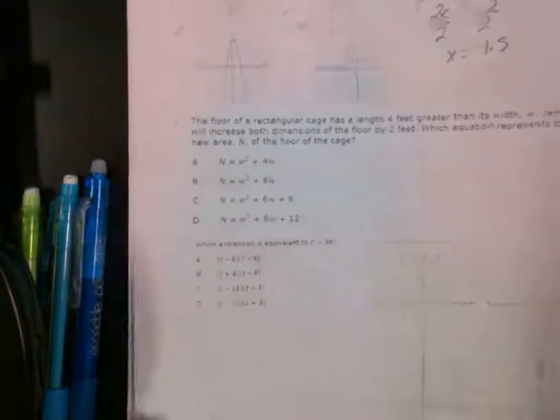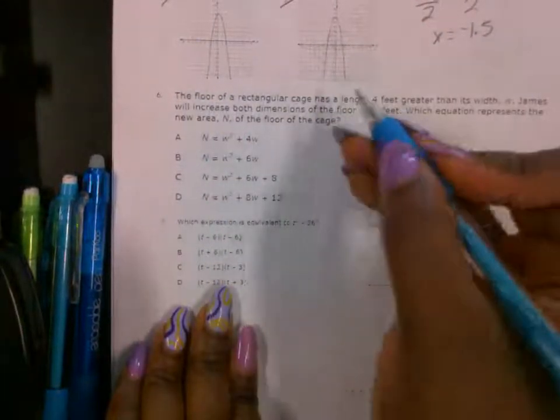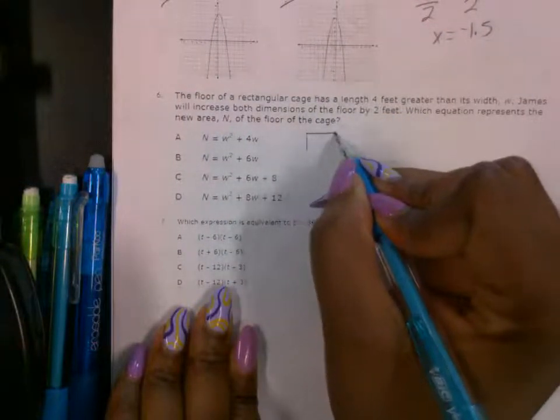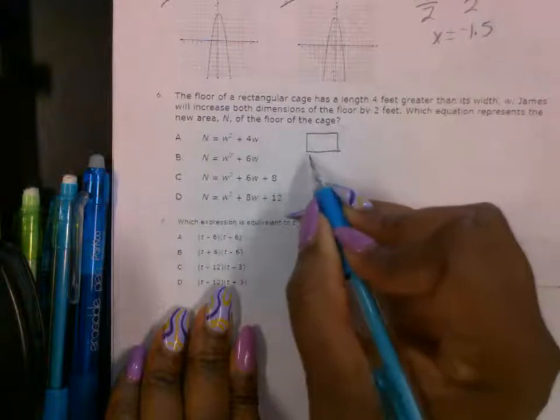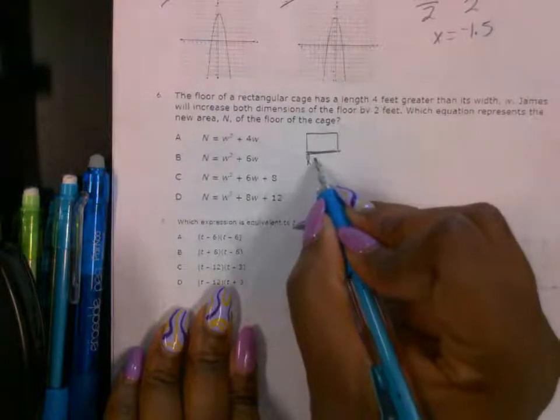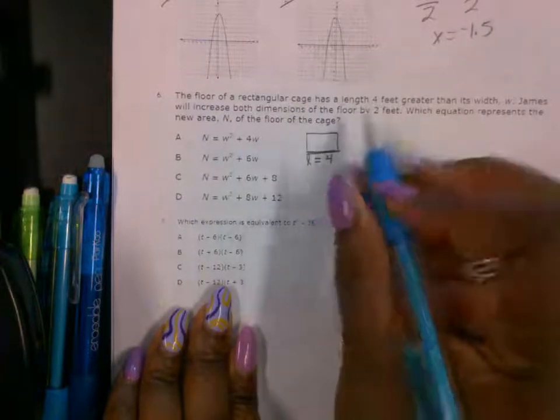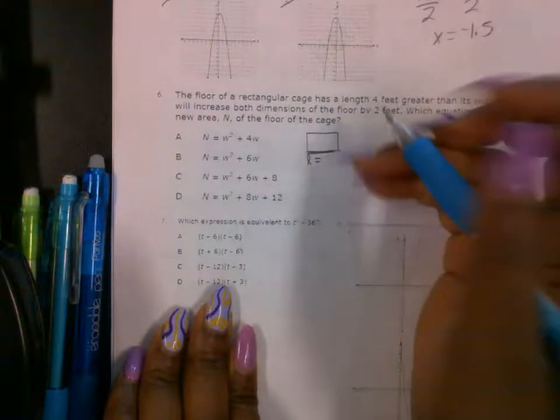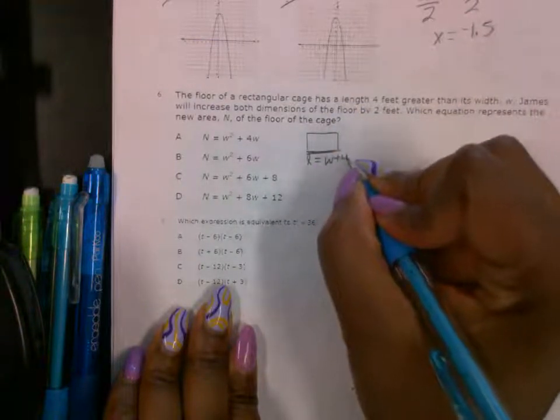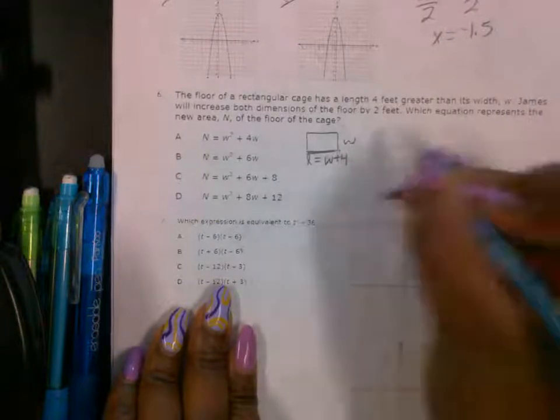Number 6, the second problem. So the floor of the rectangular cage, let's draw a rectangle. We're talking about the floor has a length L equal to 4 greater than the width. So it's W plus 4. That's how we're used to seeing it anyway. This is W, that's the width.